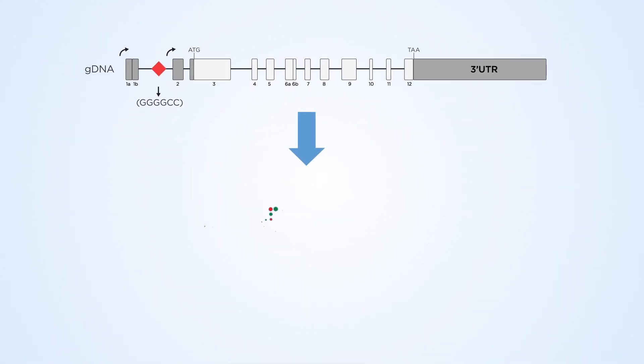The presence of the expanded repeat is thought to result in the production of toxic proteins that are a major cause of ALS and frontotemporal dementia.